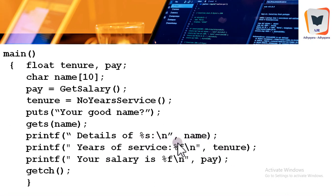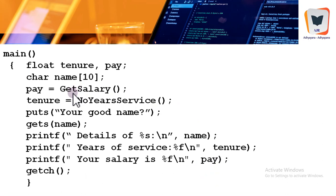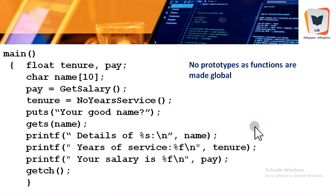The output prints details such as the name, years of service from tenure, and salary from pay. These functions never receive anything from main apart from control, but they do return something. Such functions are of limited use because they do not carry any information from the calling function — they are standalone functions that calculate or procure something and send it back to the caller.